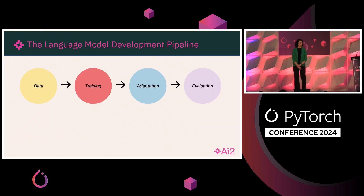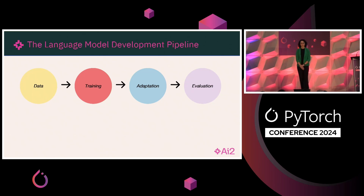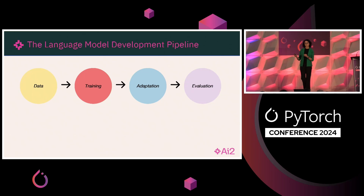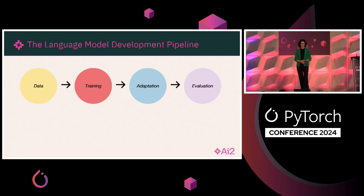We have organized our efforts into four important categories: data, which is arguably the secret sauce of building a successful language model; training, where we take this data and map it to weights that you can download and use. At the end of this stage the model is still not ready for any application, so we have also introduced the adaptation pipeline, which makes language model bases applicable to end applications or lets them follow human instructions.